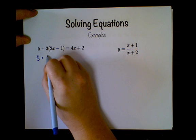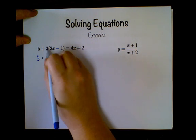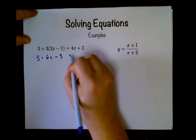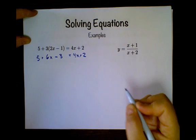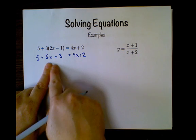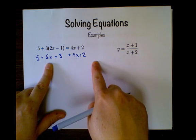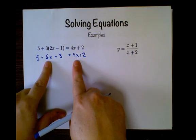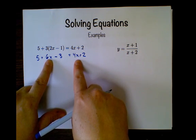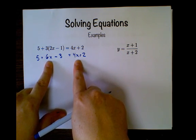So I think I'm going to go ahead and distribute first, so I have 5 plus 3 times 2x is 6x minus 3 times 1 is 3 equals 4x plus 2. I'm going to get all my x's onto this side and all my constants onto that side. Just because I see that 6x is bigger than 4x, I'm going to move the little one so that I don't have a negative coefficient because I'm lazy.